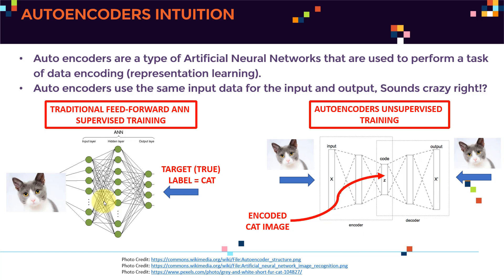When we want to train a fully connected feed-forward artificial neural network in a supervised fashion, we feed in images — let's say images of cats — and then we say the target label or ground truth will be 'cat'. We feed in the image along with the target label, another image of a dog along with its target label, and we do that over and over in a supervised fashion to train the network. We train it by changing the values of weights, and then the network will be able to learn the mappings between the input data and the output data.